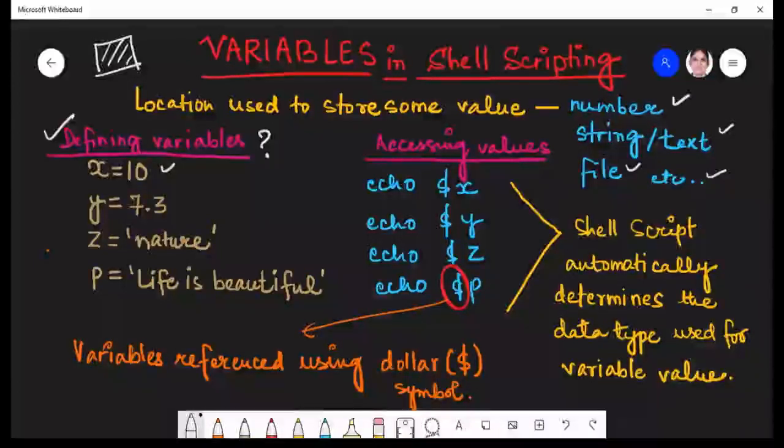Similarly here this is an integer value. In variable Y I have stored a float value. Here we have stored a letter and here we have stored a collection of letters. Both are strings but here it has only one word and it is composed of three words. And it is enclosed in single quotes or you can enclose it in double quotes.